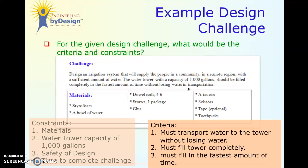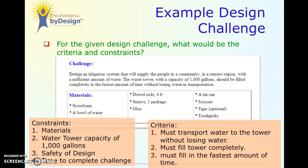Then let's look at the constraints. We are constrained to the given materials — that's usually your biggest constraint in design challenges. The water tower has a fixed capacity of one thousand gallons; it can't be bigger or smaller. Budget, safety, and time are always kind of gimme constraints. In this case we don't need to worry about budget since it's a classroom challenge, but we still have to worry about safety and always about time — how much time do we have to complete this challenge?